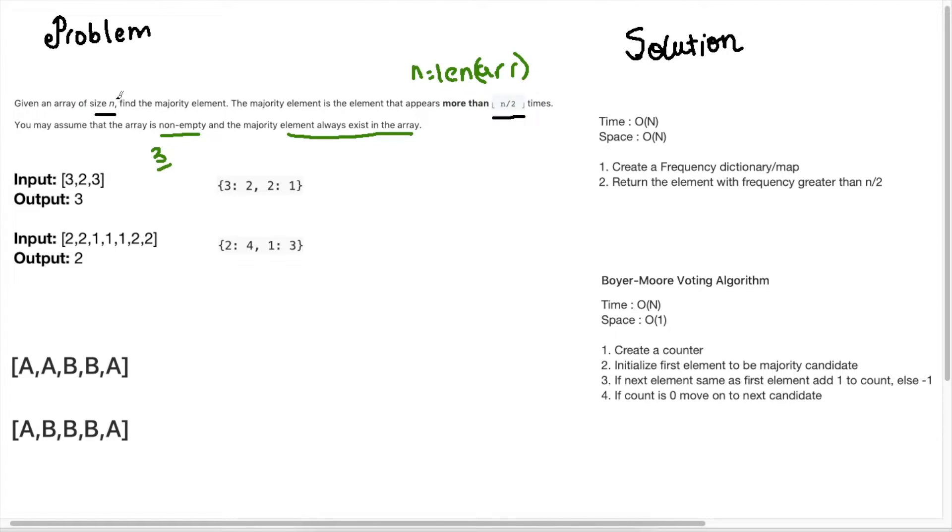Okay, so given an array of size n, find the majority element. And what is this majority element? Well, the majority element is an element that appears more than n over 2 times, where n is the length of the array.